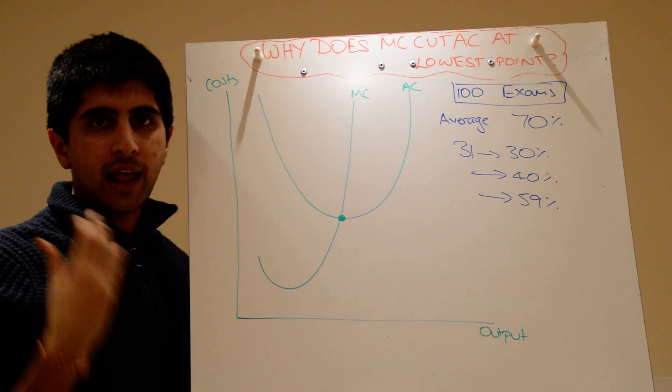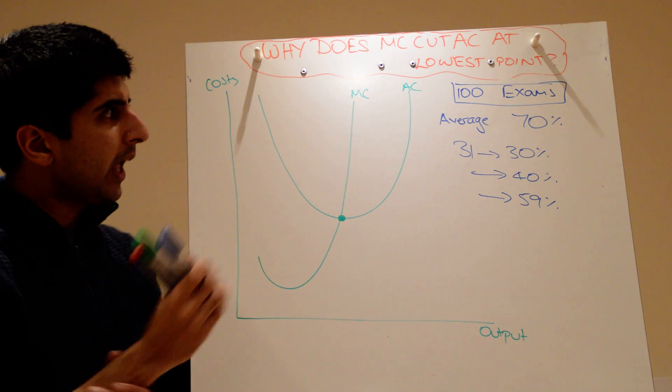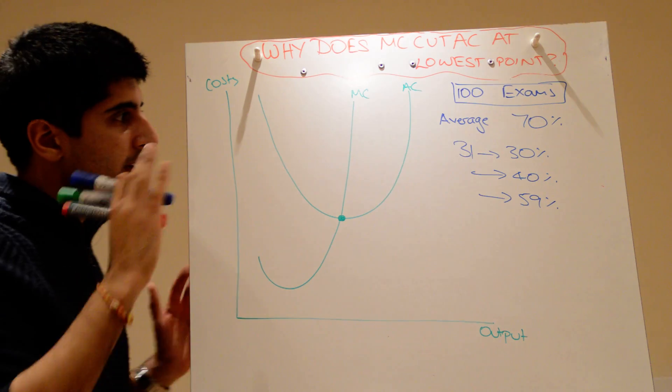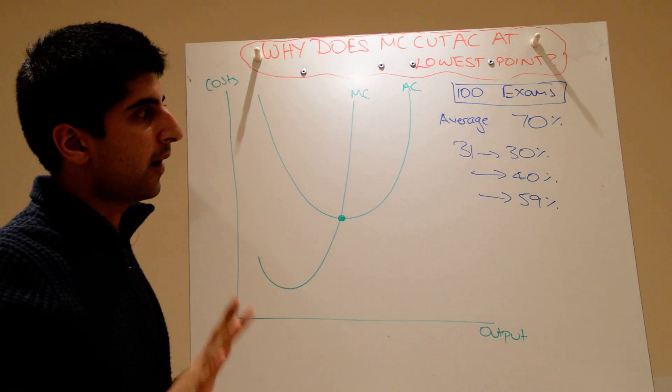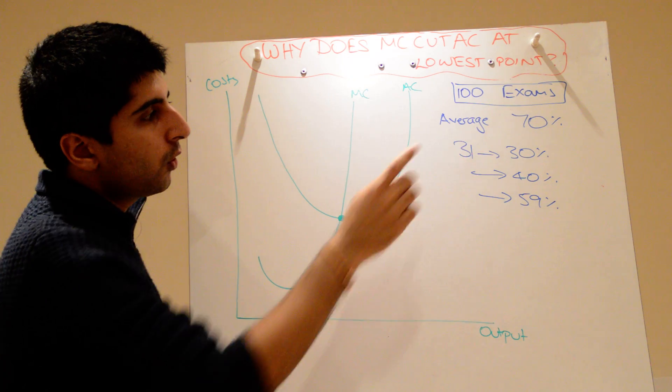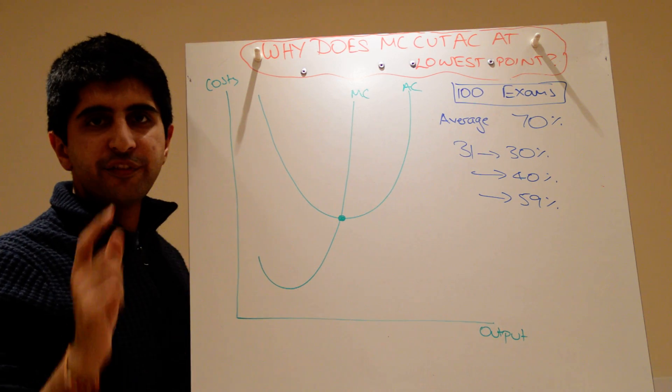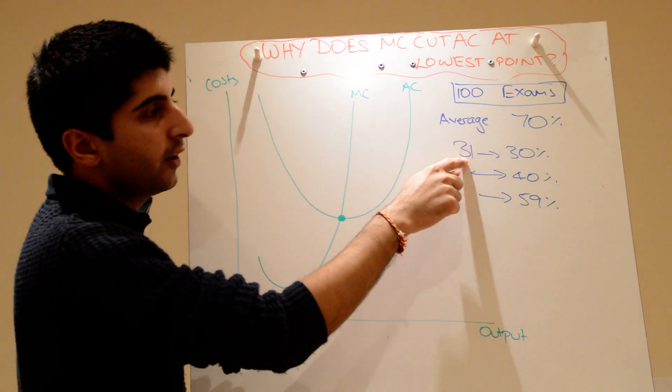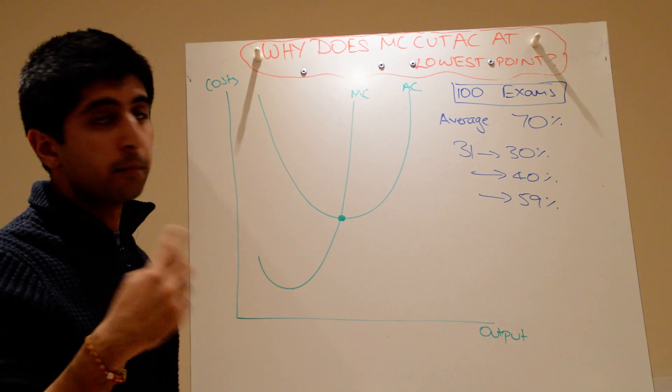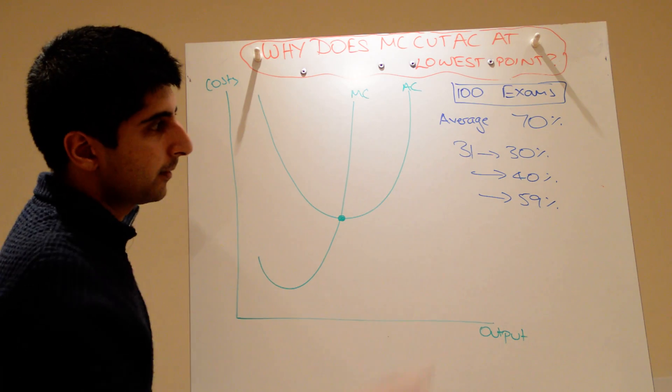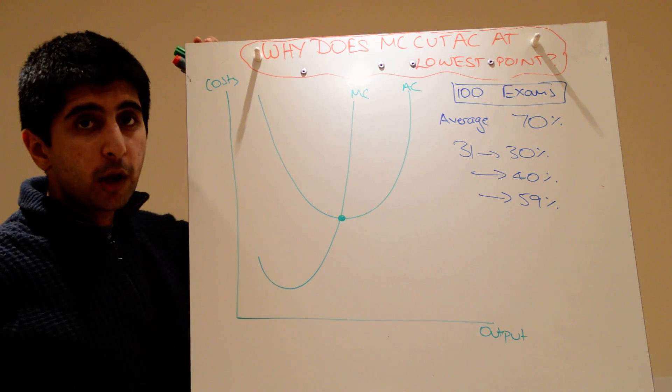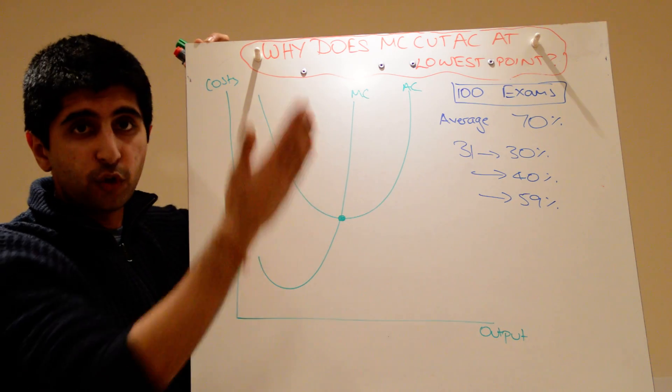For now, we're just going to keep things generic and just talk about marginal and average very dynamically. Let's assume that in your 101st exam paper, you score 31%. That's your marginal score, 31%. Now, that's a long way below your average, so your average is going to fall by a long way.